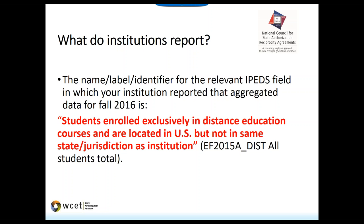To clarify the students versus enrollments distinction: 'student' equates to a student head count. Whereas enrollments could mean one student enrolled in multiple classes in a term. So we're really talking about student head counts — one student with three distance courses would be counted as one head count student, not three. We want to make sure we're clear on that.